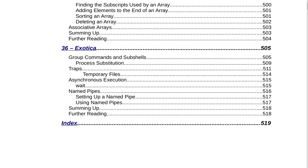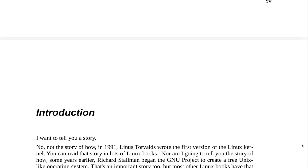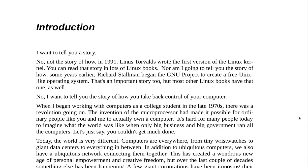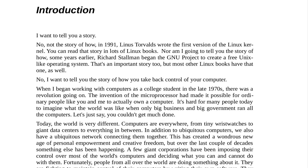Section 36 is Exotica on page 505, covering group commands and subshells, process substitution, traps, temporary files, asynchronous execution, wait, named pipes, setting up a named pipe, using named pipes, summing up, and further reading. The index is on page 519. The book is dedicated to Karen. Okay, thank you.